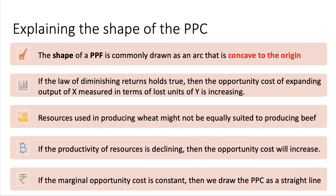So the PPC — production possibility curve — is usually depicted as an arc with one commodity on the x-axis and one on the y-axis. Each point on the arc shows the most efficient output quantity of the two commodities that can be produced using available resources. The shape of the PPF is commonly drawn as concave to the origin because of the law of diminishing returns. The basic reason is that some resources used in making wheat are not as well suited to making beef and vice versa. So if the marginal productivity of resources is declining, then the opportunity cost will go up.